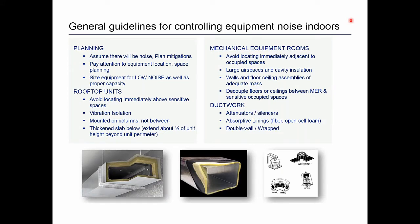What can you do to reduce indoor noise from HVAC systems? Number one: if you have the opportunity, planning is your best friend. You must assume there will be noise and plan mitigations in advance. Pay attention to equipment location in your space planning and size your equipment for low noise as well as proper capacity. A low-noise unit will do you far more good once installed than trying to retrofit a noisy one. For rooftop systems, avoid locating units immediately above sensitive spaces like offices or doctor's examination rooms. Use vibration isolation, mount the mass and weight over building columns rather than in between them, and add a large thick mass on which the unit sits — it blocks the vibration path.